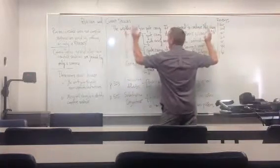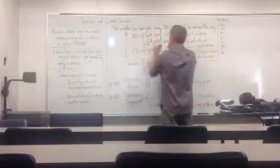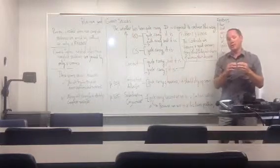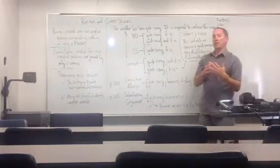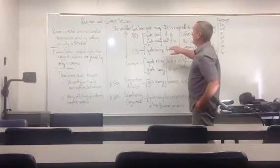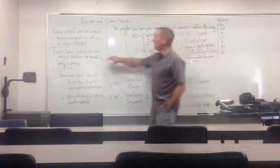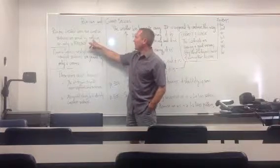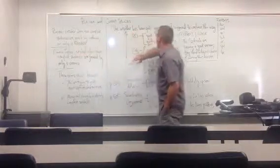So, run-ons and comma splices occur when we take these two sentences and we try to join them into one, and in particular by making them a compound sentence. So, run-ons occur, again, when you either have nothing between those two sentences or only one of these conjunctions.